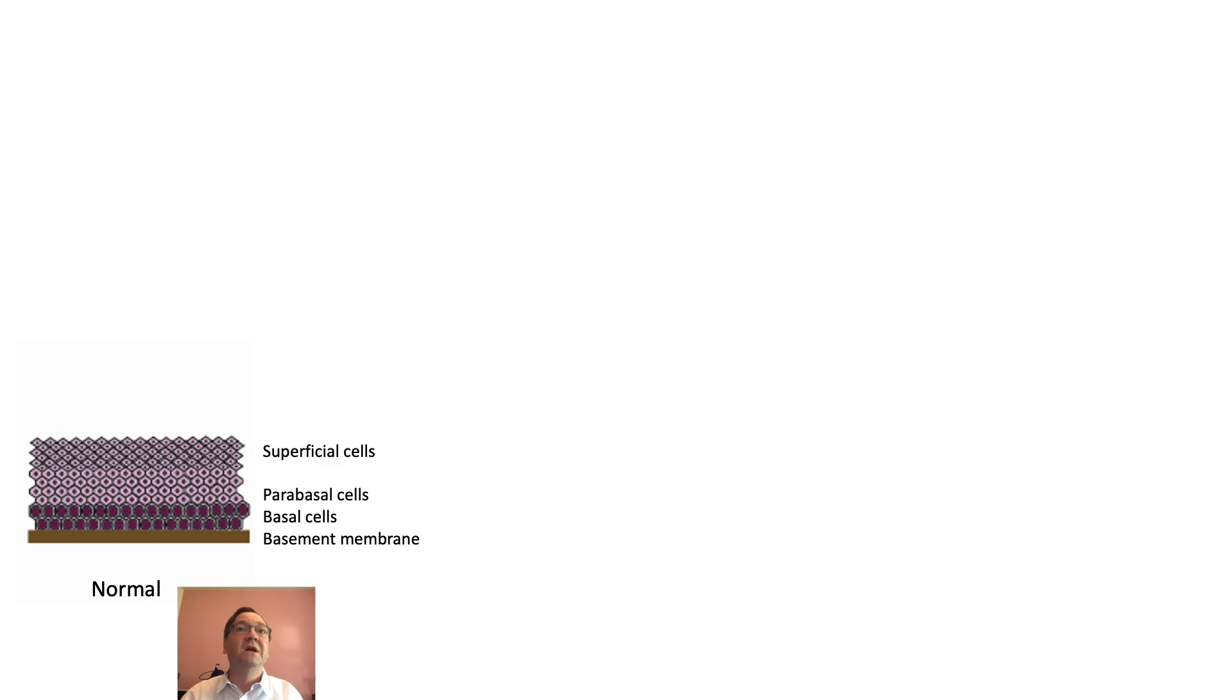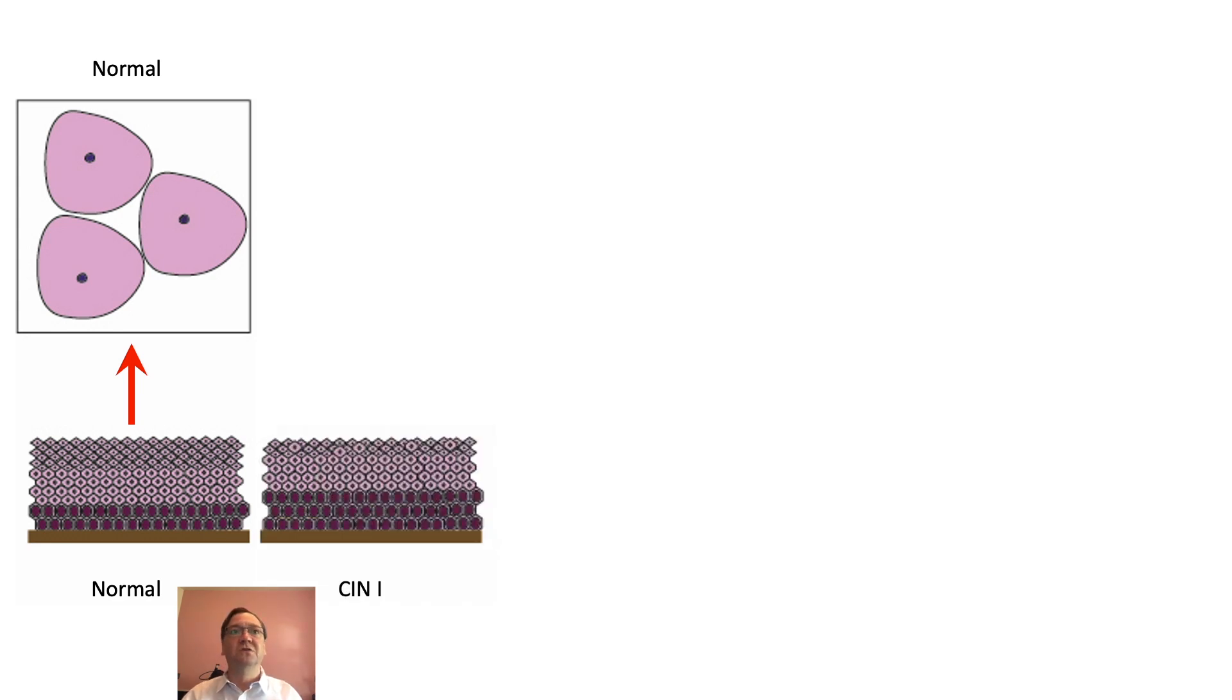Again, we have the basement membrane, basal cells, parabasal cells, and superficial cells. If you take the top few layers of these cells, you'll get predominantly superficial cells that look pink with small nuclei on cytology—that's a normal smear.